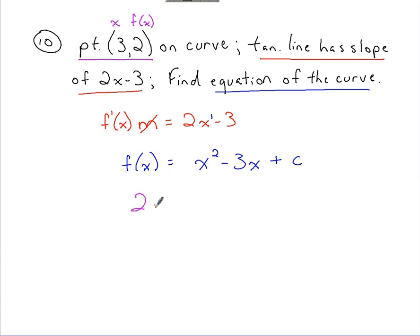So 2 would equal 3 squared minus 3 times 3 plus c. So all this right here is going to subtract out. So 2 is going to equal c.